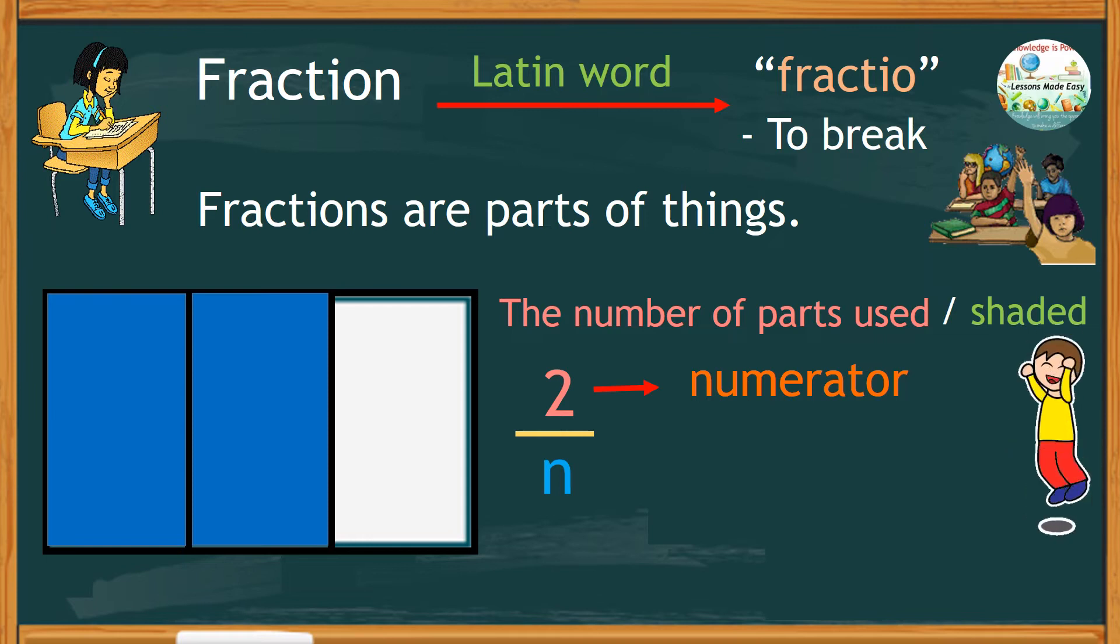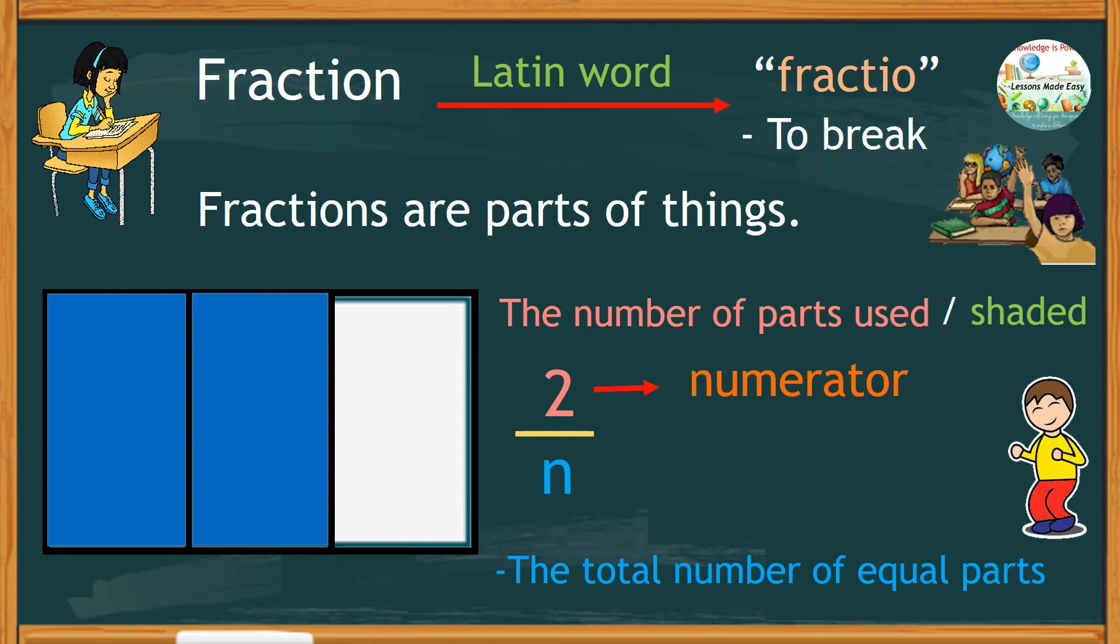And the number below must be the total number of equal parts, which is three equal parts in this example. And we call this the denominator.